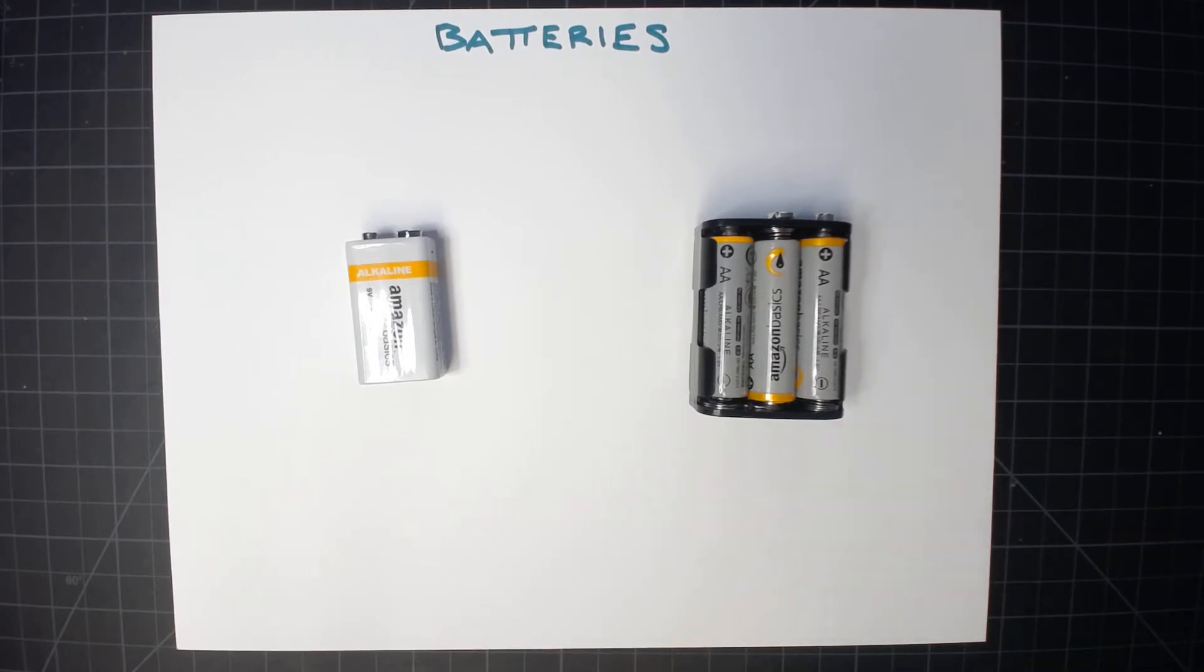There's two main differences. The first is in the capacity of the battery, how much energy the battery can actually store. The second is how much current the battery can supply to whatever you're trying to power.